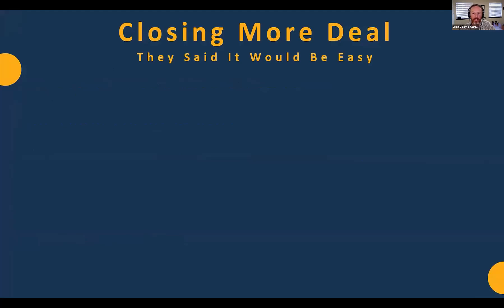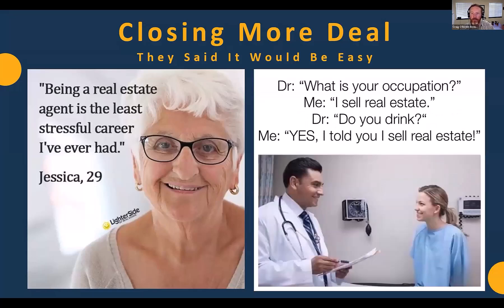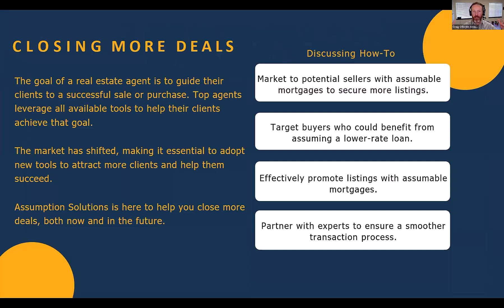Now I'll put the real estate agent hat on. Marketing to potential sellers with assumable mortgages: reach out to past clients or your network with assumable loans, and highlight the value of their assumable mortgage in a rising interest rate market. They have a unique asset that could make their home sell faster or potentially for more money. Use social media to educate homeowners on assumable mortgages, create educational videos, and showcase your expertise. Use farming tools to identify properties with assumable loans originated or refinanced in the last few years — title companies can help. In Colorado Springs alone, one county had 14,000 loans originated between March 2020 and March 2022 with rates below 3.5%.